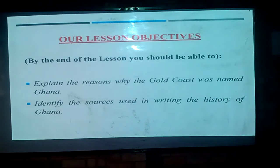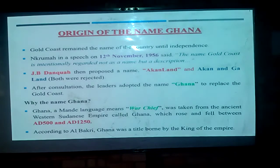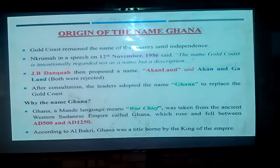Let's look at the origin of the name Ghana — where the name Ghana came from. We are already aware that the name of present-day Ghana was called the Gold Coast. The Gold Coast remained the name of the country until independence, when the Gold Coast gained its independence in 1957. After independence, the leaders at that time decided that the name Gold Coast was just a mere description.